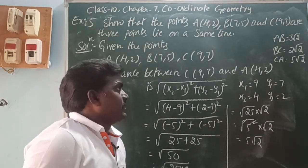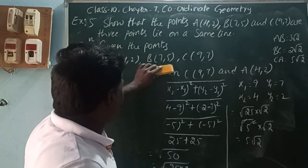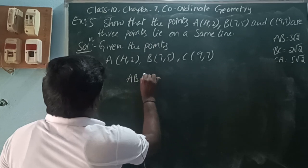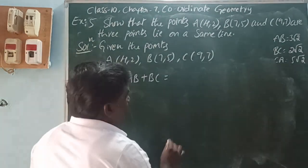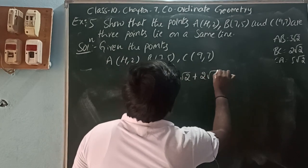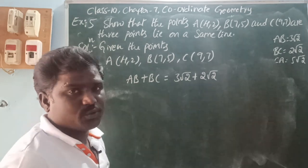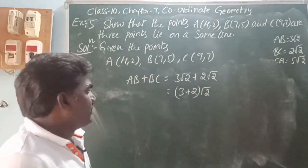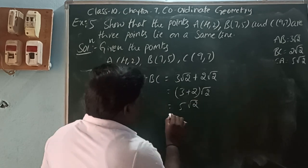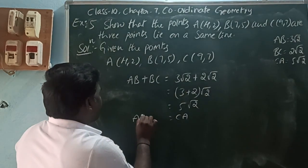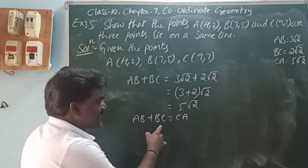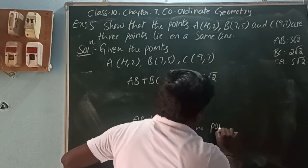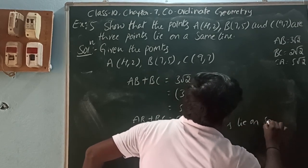For collinear points, the sum of any two sides must equal the third side. Here, AB plus BC = 3√2 plus 2√2 = (3 + 2)√2 = 5√2, which equals CA. So AB plus BC equals CA. Therefore the sum of any two sides equals the third side, so A, B, C lie on the same line — hence proved.